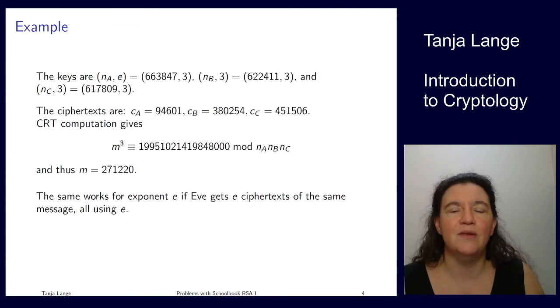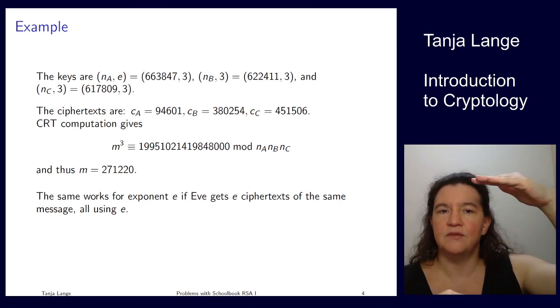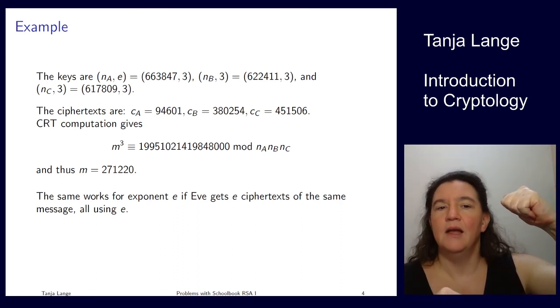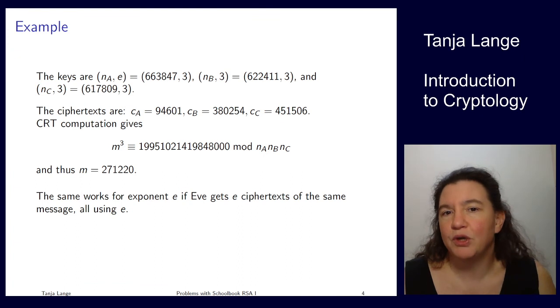So if they would instead be using the 65537, she would need to find some, well, pretty big party organizer, Patty, who has sent messages to at least 65537 many people. So, okay, this is really only a problem for low exponent, but, well, you might want to use 17, or you might want to use 3, so this is an issue.